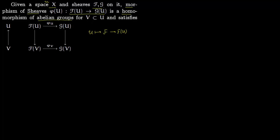This homomorphism should satisfy a commutative diagram. You're given V a subset of U, so V is contained within U. Corresponding to this you have contravariance for pre-sheaf or sheaf F, and then you have contravariance for sheaf G, and then you have these group homomorphisms. Obviously you have homomorphisms here also, and this diagram should commute.